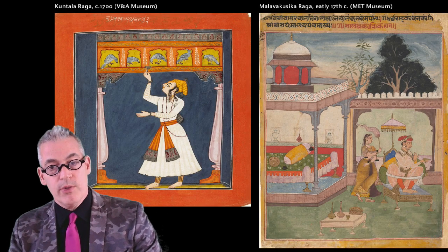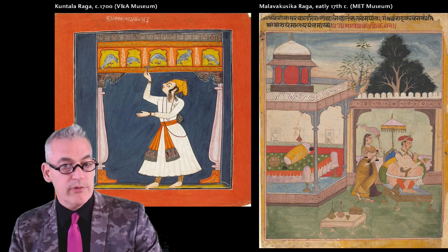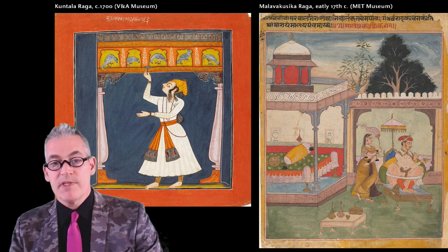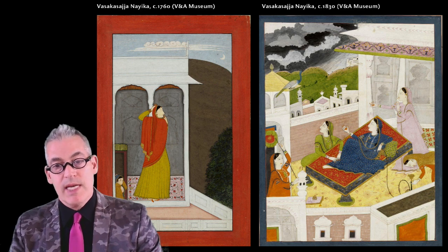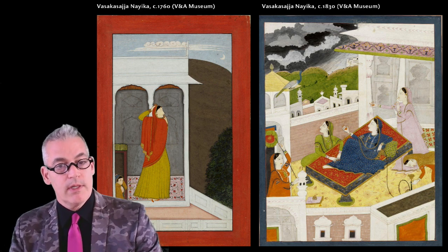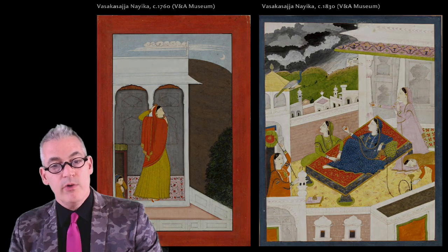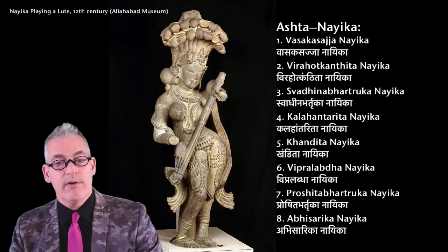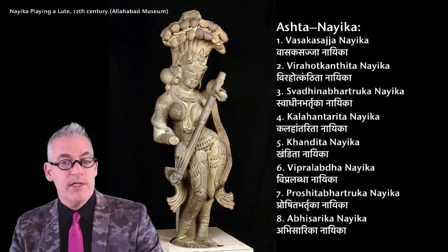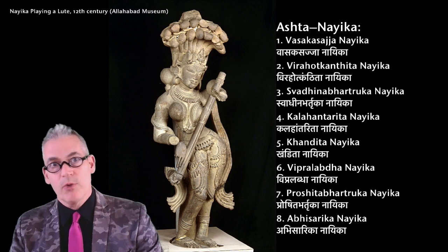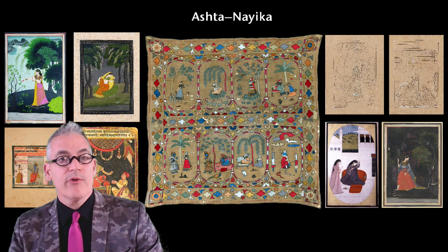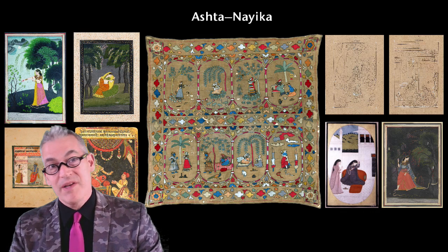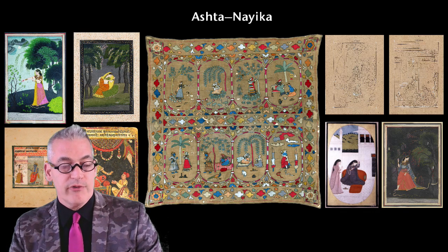I also found overlap with scenes of the Ashtanaika, which are heroines depicting different states in a romantic relationship. The Ashtanaikas are used as a theme throughout Indian art in painting, sculpture, music, dance, and literature. So this seemed like a really good place to continue my investigation. And I found that the eight panels on the RISD rumal correspond exactly to the Ashtanaikas.